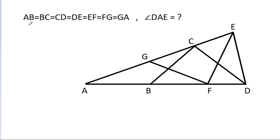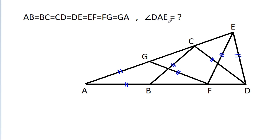In this video, we have given that AB is equal to BC, is equal to CD, is equal to DE, is equal to EF, is equal to FG, that is equal to GA. So angle DAE is equal to what?